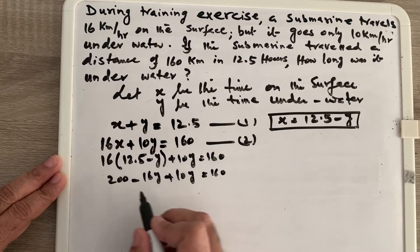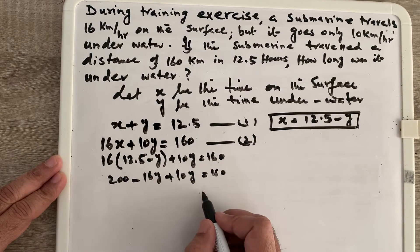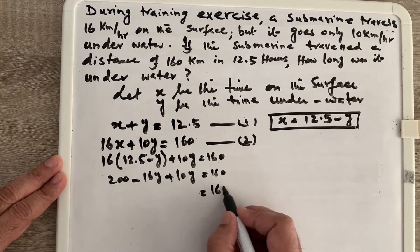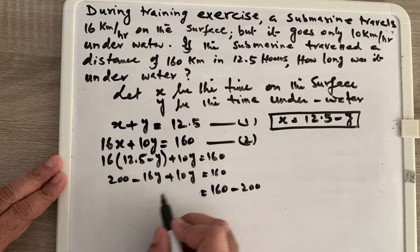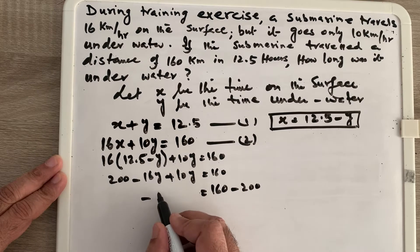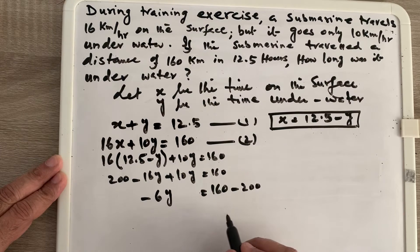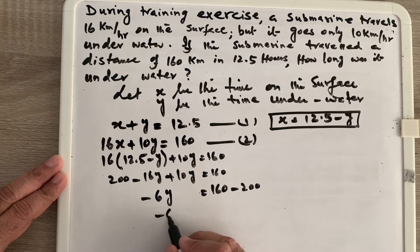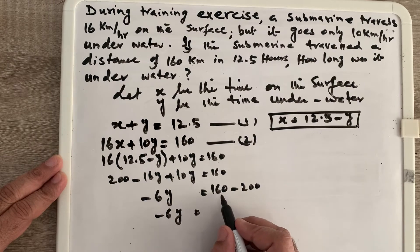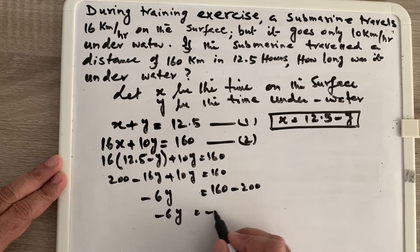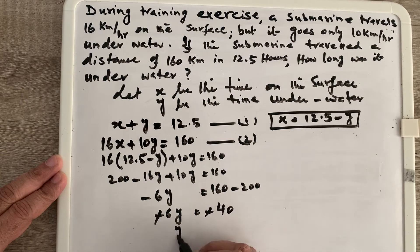I combine −16y and +10y to get −6y, then bring 200 to the other side of the equation: −6y = 160 − 200, which gives −6y = −40.